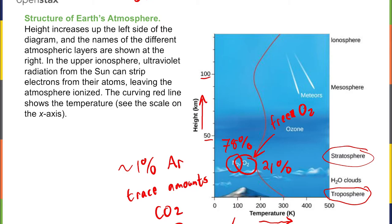Outer space effectively starts at 100 kilometers, where the atmospheric gas density is so low that light scattering disappears and everything looks black. The ionosphere is well above 100 kilometers — that's where charged particles can get trapped. The mesosphere (meso meaning middle) is between the stratosphere and ionosphere, and meteors burn up there because that's where the atmosphere becomes dense enough to heat them up. There is a particular layer of ozone at the very upper stratosphere.